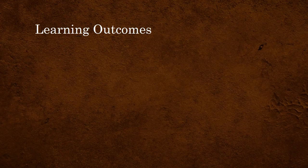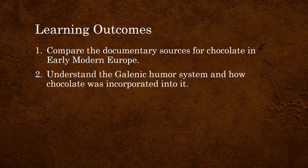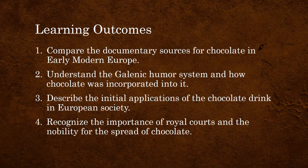The learning outcomes for this unit are: 1. Compare the documentary sources for chocolate in early modern Europe. 2. Understand the Galenic humour system and how chocolate was incorporated into it. 3. Describe the initial applications of the chocolate drink in European society. 4. Recognize the importance of royal courts and the nobility for the spread of chocolate.